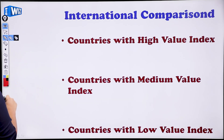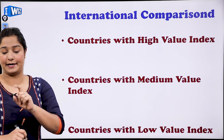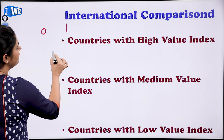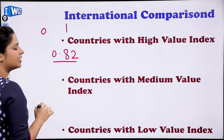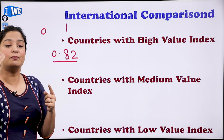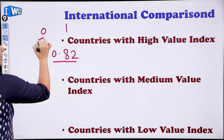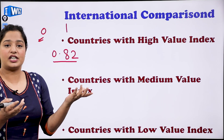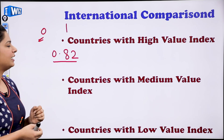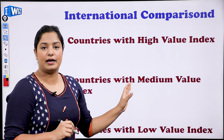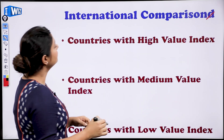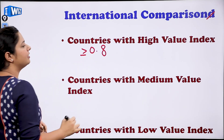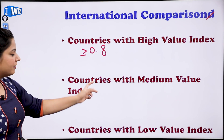International comparison — the Human Development Index ranges from 0 to 1. If the index value is close to 1 — for example, 0.82 — that means the country is highly developed with high human development. If it is close to 0 — like 0.1 or 0.25 — that means human development is very low, people are dying from diseases, education is poor. Countries are classified as high value index (0.8 and above), medium value index, and low value index.